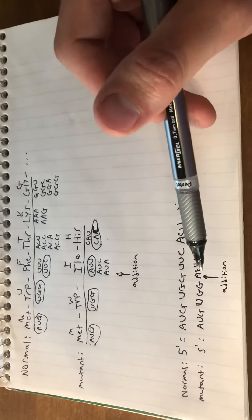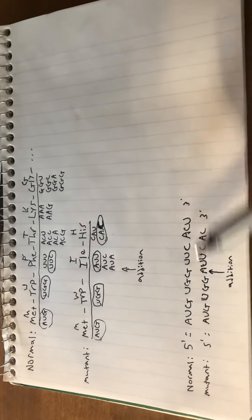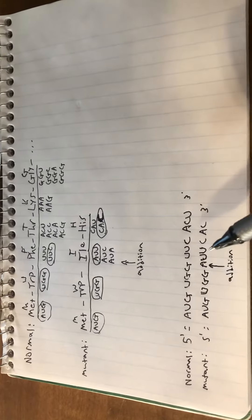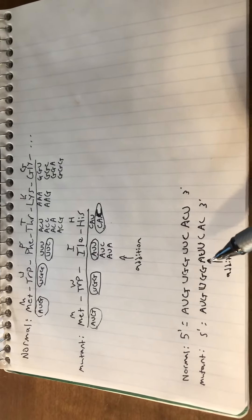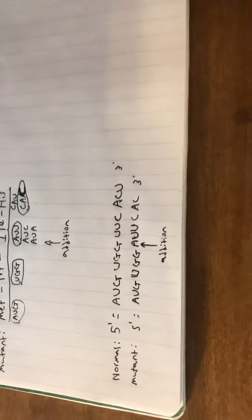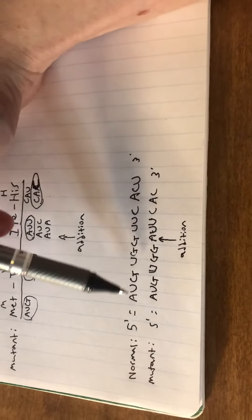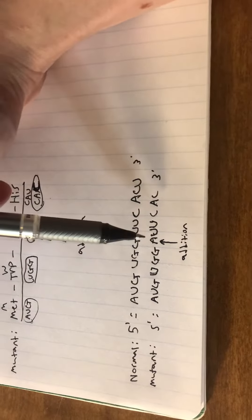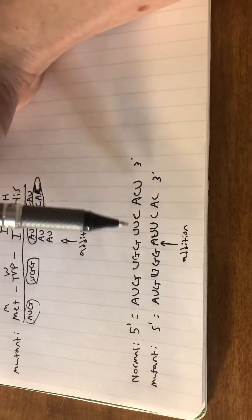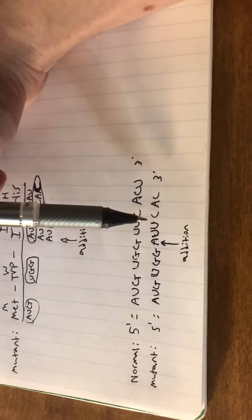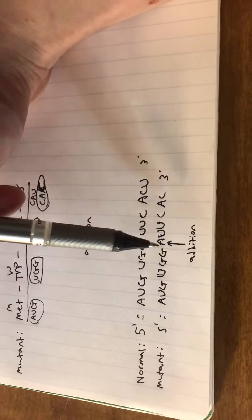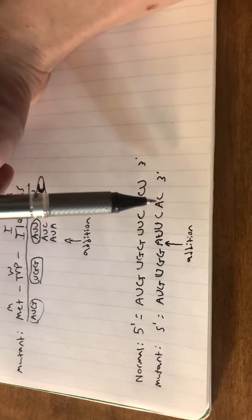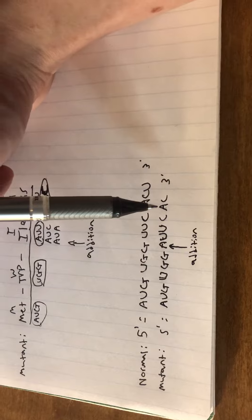As you can see here, I have written out the coding sequences for both the normal and mutant proteins. AUG and UGG are both the same, but an A is added. So instead of UCC you get AUU, and then that C at the end is pulled over to the next codon.